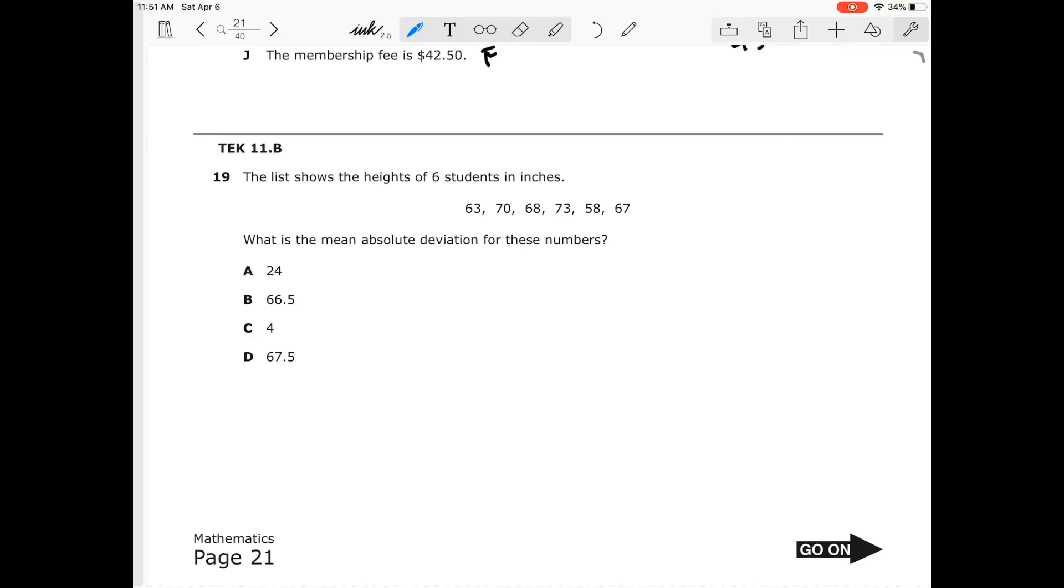Number 19. This is going to take a little bit, but it's really not going to take that long. The list shows the height of the students in inches and we want to find the MAD, the mean absolute deviation for these numbers. So first off I need to do is find my mean. So in order to find the mean, I'm going to add all those numbers up together. So I'm going to say 63 plus 70 plus 68 plus 73 plus 58 plus 67 and divide that by six numbers. And that will give me my mean is equal to 66.5.